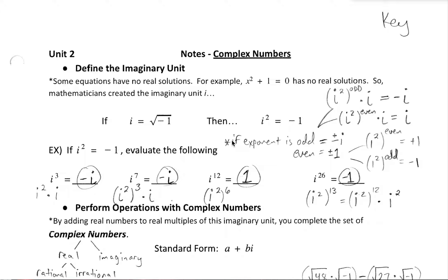So let's describe the imaginary unit. There are two ways to define it: i could be the square root of negative one, or if we square both sides of that statement, we get a second definition, which is that i squared equals negative one. We'll be using both of those definitions to work with.